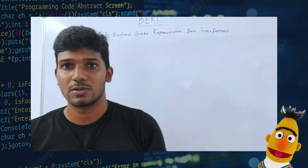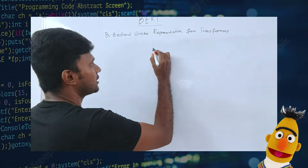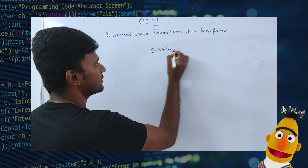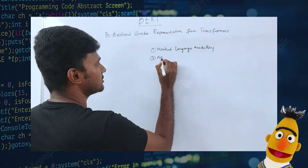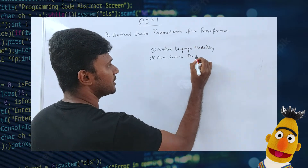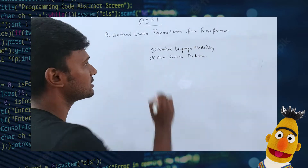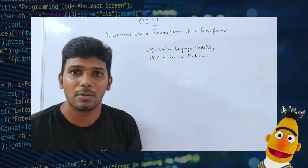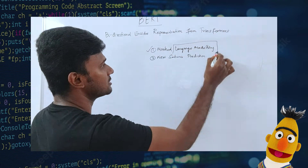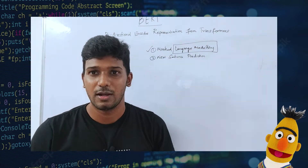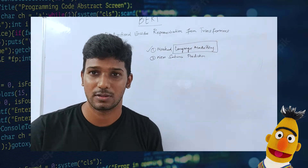Hello and welcome back. In the previous videos I told you about the pre-training strategies used in BERT. The first one is called masked language modeling and the second one is next sentence prediction. These are the two pre-training strategies used in BERT, and we are now going to discuss about these things. First, let us discuss masked language modeling, but before that we need to understand what language modeling is.